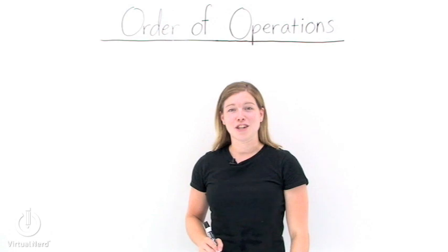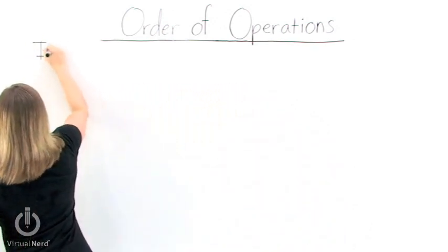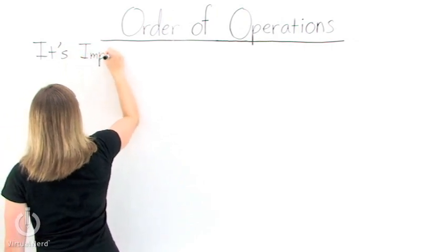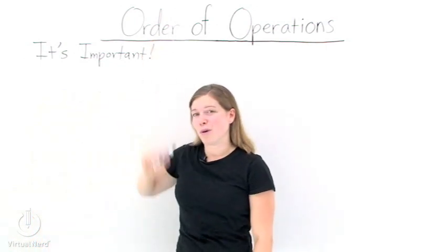So you want to know about the order of operations. Well the first thing to know about the order of operations is that it's the steps we follow in order to simplify or evaluate an algebraic expression. The second thing to know about the order of operations is it's important.